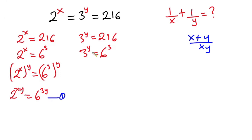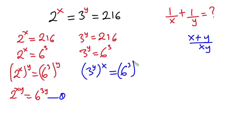Now let's move to the second equation. Comparing it to the fraction, we have x over here but there is no x in that equation. So we introduce x by taking the x-th root, giving us 3 to the power xy is equal to 6 to the power 3x. I'll call this equation 2.